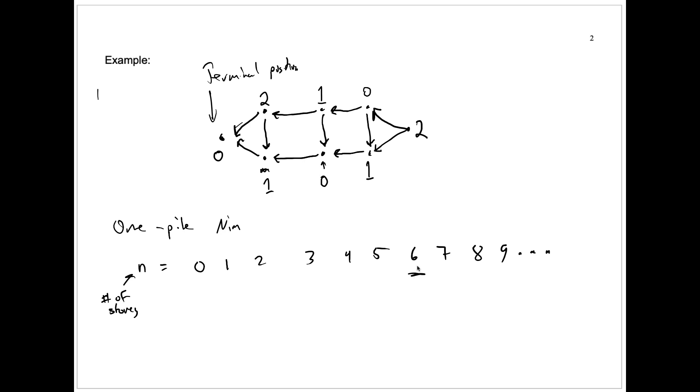Well, you're allowed to take any number. You could take one, you could take two. Of course, you have to take at least one. So you could take one or two or three or four or five or all six. So all the smaller numbers are followers.